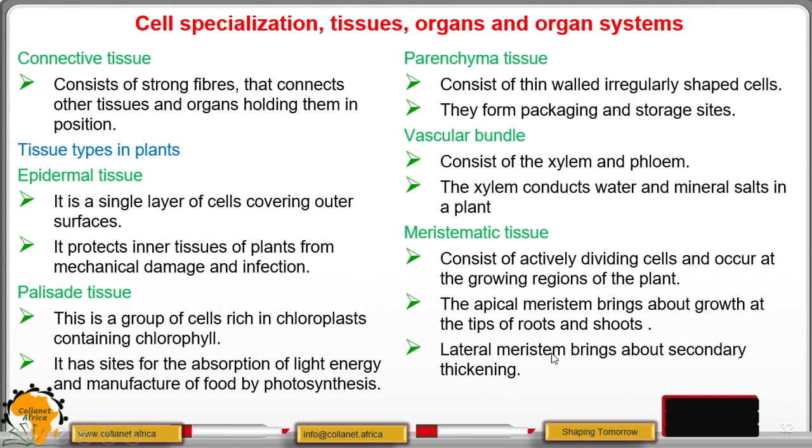The lateral meristem brings about secondary thickening or secondary growth. For example, the plant is able to increase in width. But for apical meristem, the plant is increasing in height.